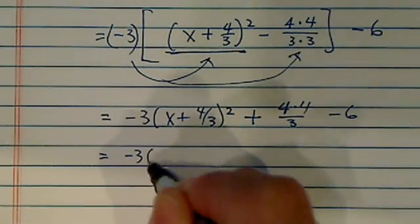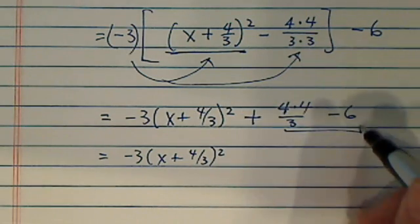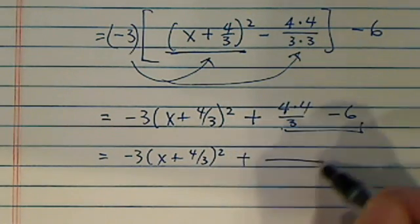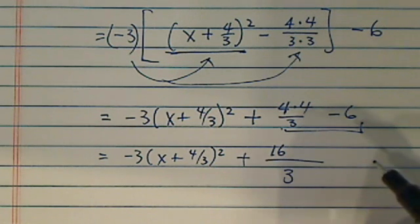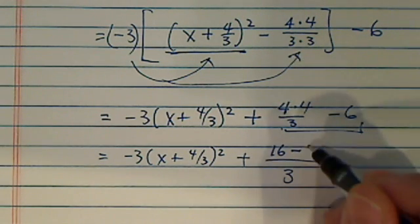And a couple more steps then over there. x plus 4 over 3 over here, and then let's combine this one. Common denominator of 3 and 16 on top, and then I have a minus 18 here.